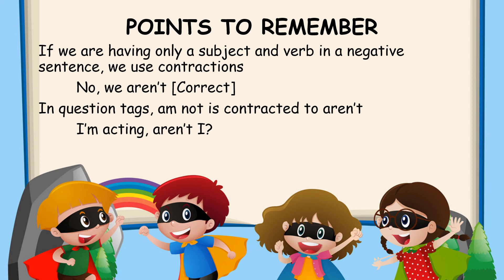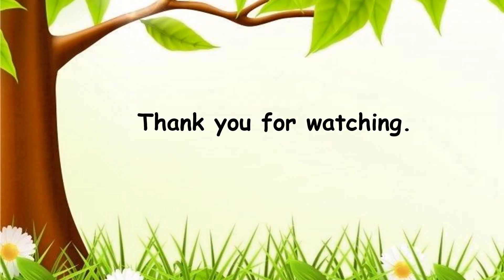In question tags, 'am not' is contracted to 'aren't.' For example, 'I am acting, aren't I?' or 'I am not acting, right?' These are the points we have to remember. I hope you have understood this chapter. Thank you for watching and have a nice day.